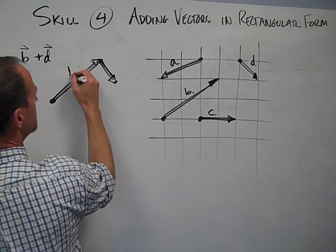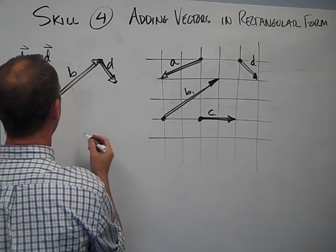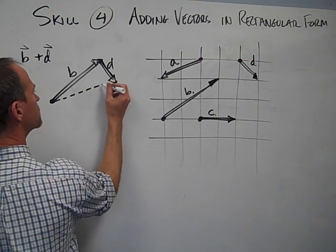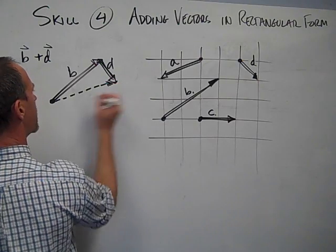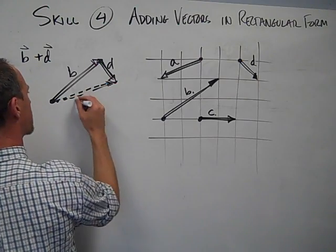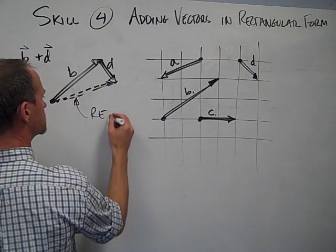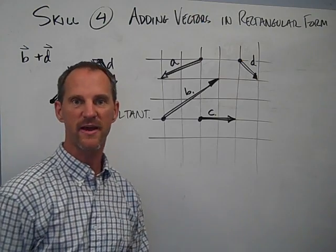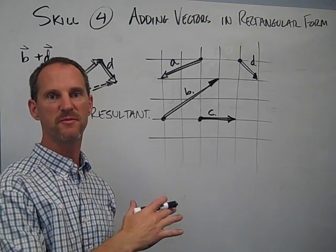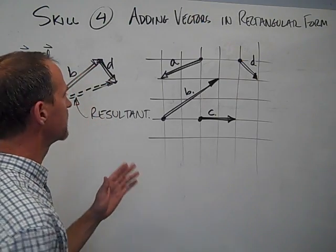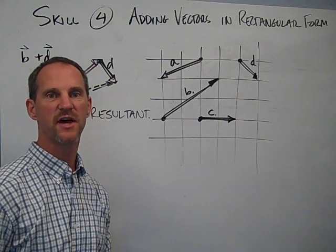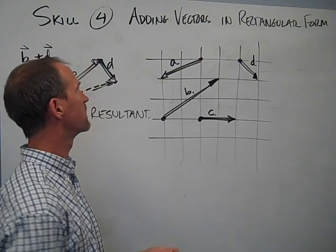So this is B, and this is D. And then the resultant is where we go from the start of one to the end of the other. So that's my resultant vector, it's called, which is the sum of those two. So that's one of the really cool things about vectors is you can take two of them, combine them to make one, or you can take one vector, and you can break it down into its two parts that are perhaps horizontal and vertical, and we'll be doing that in another skill.